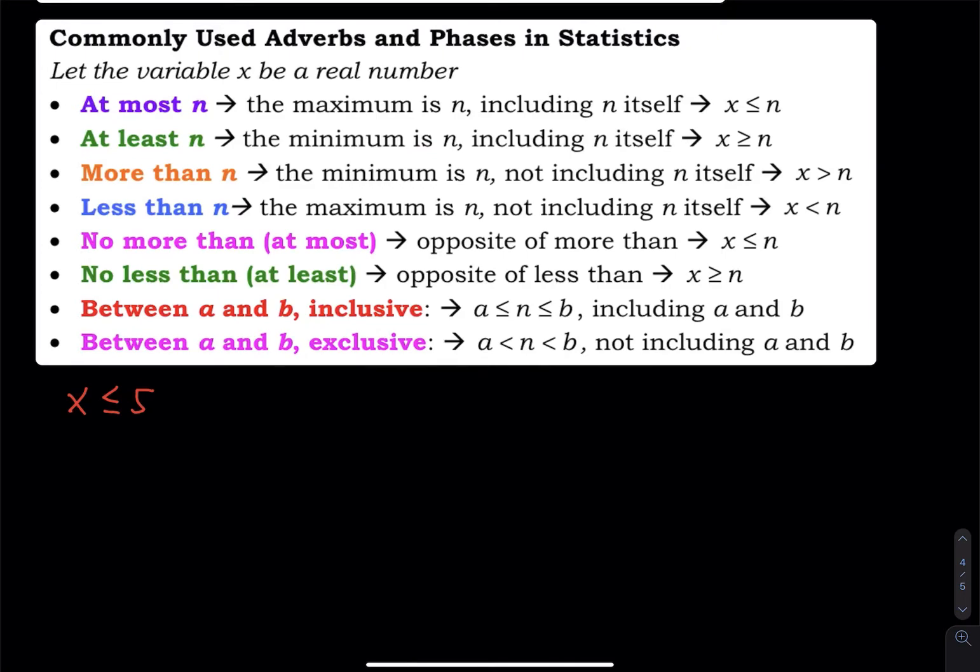But if you say you have at least 5 pairs of sneakers, that's many pairs. At least is x greater than or equal to 5. That means your minimum is 5 pairs. The maximum can be 1 million, it can be 10 million.